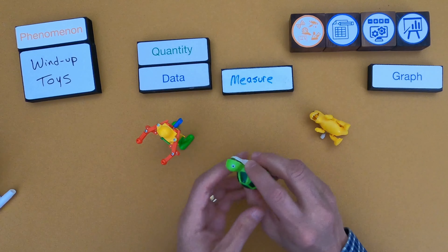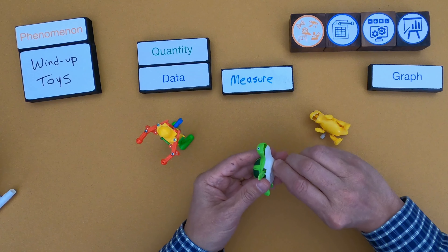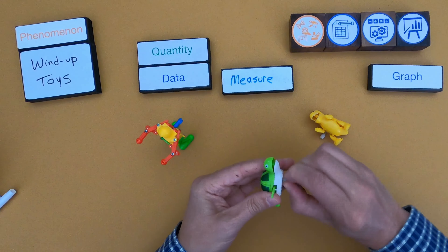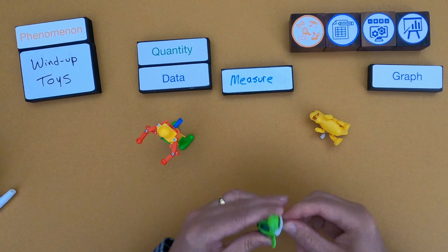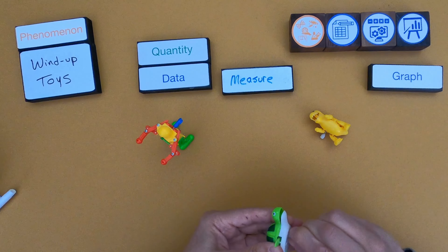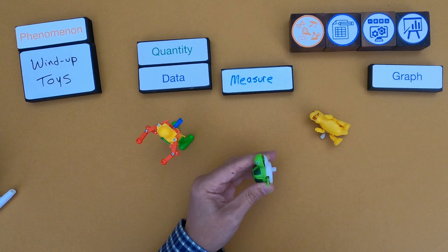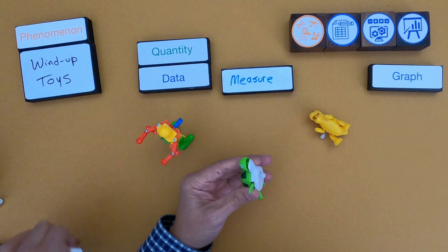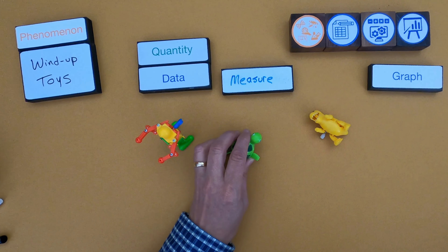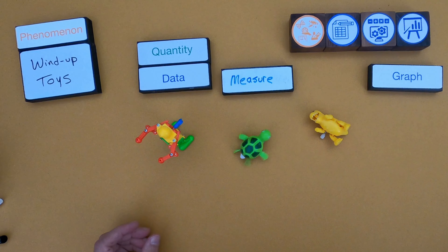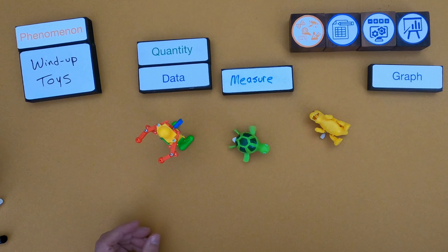Now I'm going to do the turtle — same thing, I'll count the number of winds: one, two, three, four, five, six, seven, eight, nine — just nine. I'll record that as data and then do the timer. Get ready for the turtle, it really goes. On your marks, get set, start. [Turtle runs.] And stop.